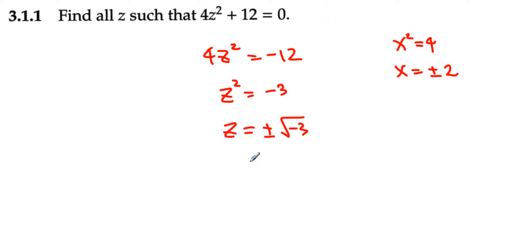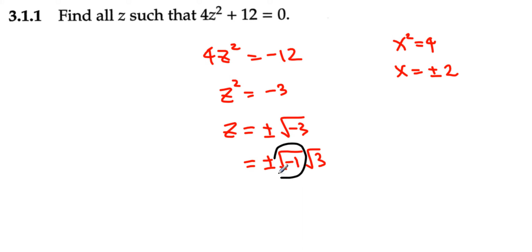But wait — radical negative 3 can be expressed as square root of negative 1 times square root of 3. And we know that the square root of negative 1 is defined as i, so we can say that our final answer is plus or minus i radical 3.